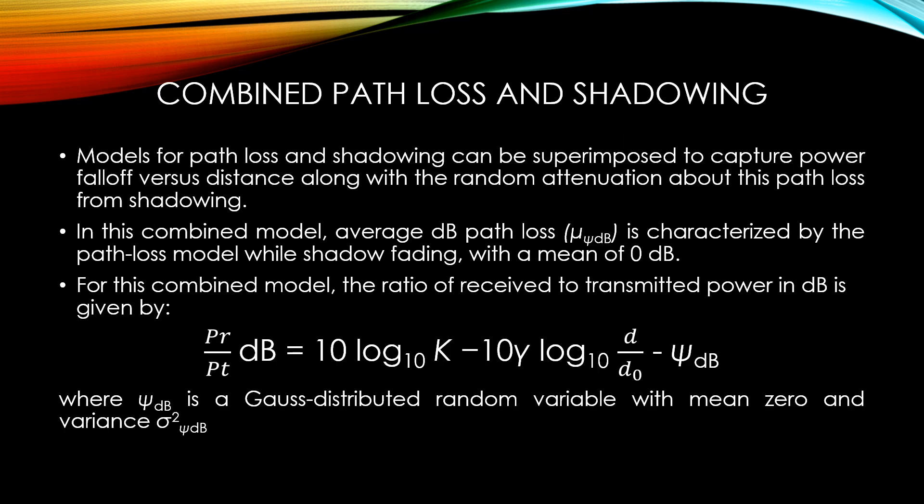Combined path loss and shadowing. Models for path loss and shadowing can be superimposed to capture power fall-off versus distance along with random attenuation about this path loss from shadowing. In this combined model, average dB path loss μψdB is characterized by the path loss model while shadow fading with a mean of 0 dB. For this combined model, the ratio of received to transmitted power in dB is given by Pr upon Pt dB equal to 10 log 10 K minus 10γ log 10 (d upon d0) minus ψdB, where ψdB is a Gauss distributed random variable with mean 0 and variance σ². The path loss decreases linearly relative to the log 10 d with a slope of 10γ dB per decade, where γ is the path loss exponent.